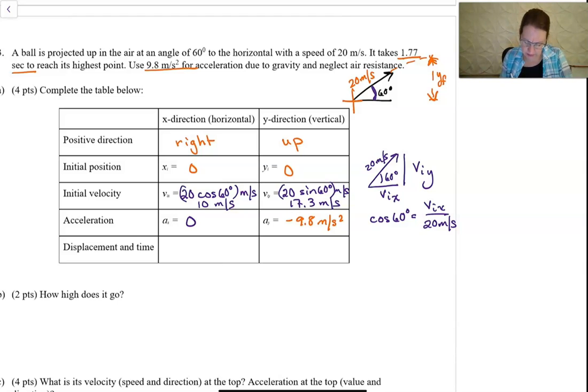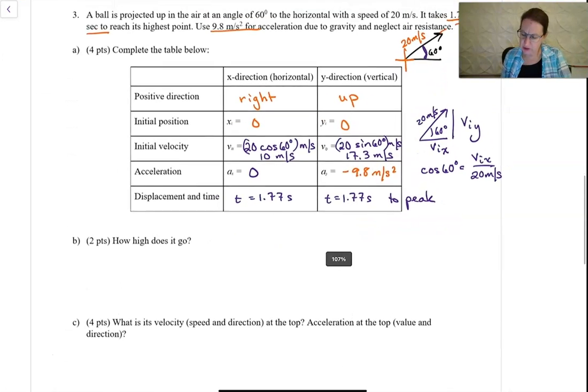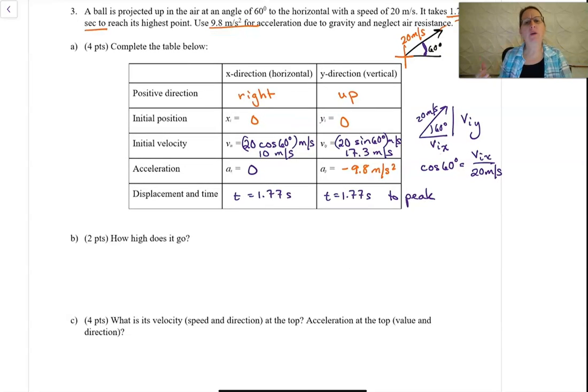And then we have the time. The time is 1.77 seconds to the peak. And so it asks, the first question is, how high does it go? So of your equations for constant acceleration, Y is equal to Y initial plus V initial in the Y direction times T plus 1 half A_Y T squared.